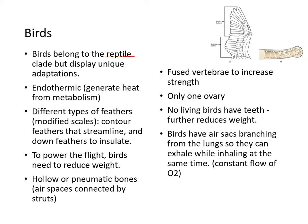Birds belong to the reptile clade but display unique adaptations. They are endothermic — they generate their own heat. There are different types of feathers, which are modified scales: contour feathers that streamline, and down feathers that insulate. To power flight, birds need to reduce weight, so they have hollow bones with air spaces inside and fused vertebrae for strength. They only have one ovary, no teeth, and air sacs branching from the lungs that allow a constant flow of oxygen — they can exhale while inhaling.